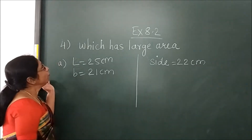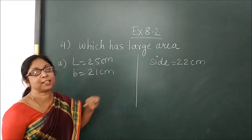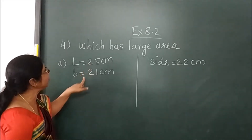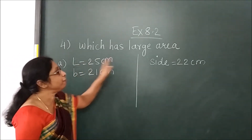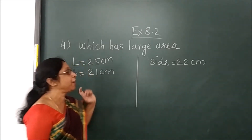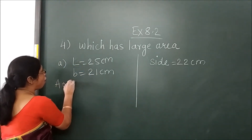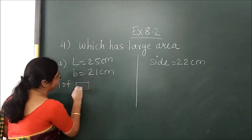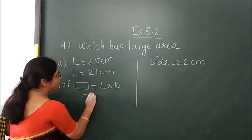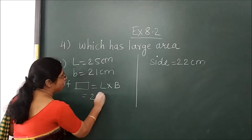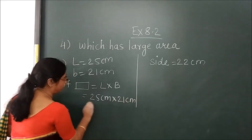Now the 4th question has a large area. Two areas are given. Length and breadth are given, so you will find the area of a rectangle. If only side is given, you find the area of a square. Here you will find the area of a rectangle.